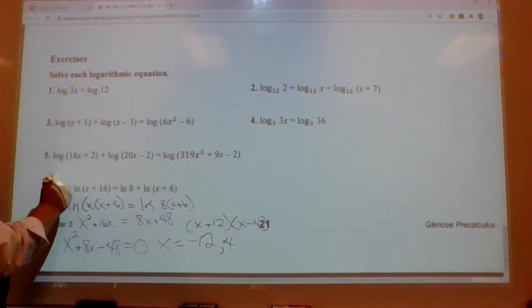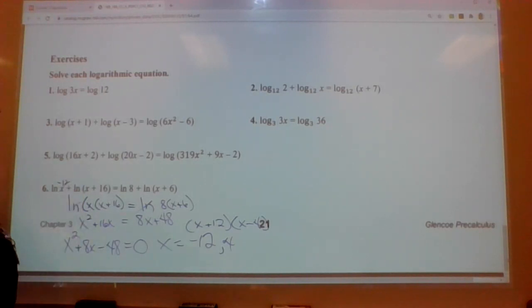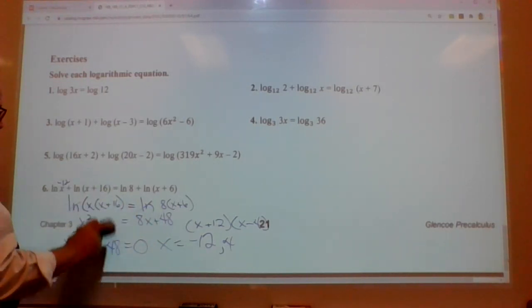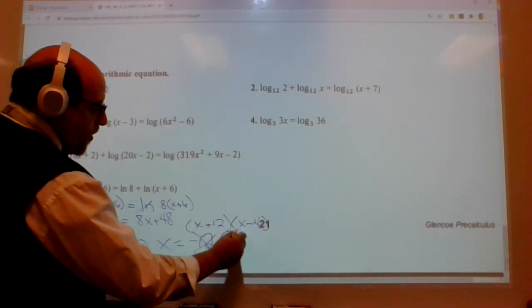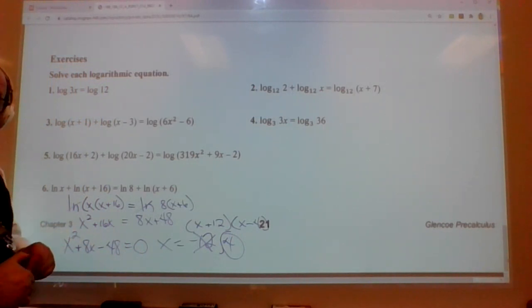12 and positive 4. I know that when I put this in, I cannot have a negative 12 here. It doesn't exist. All right. But I can put a 4 in there and everything's hunky-dory. So 12 is extraneous. 4 is not. And that's it. That's how you solve them.